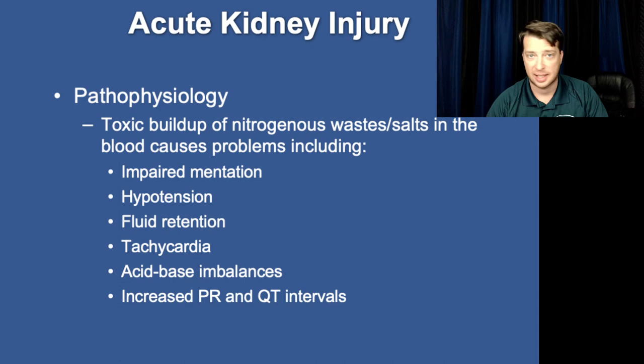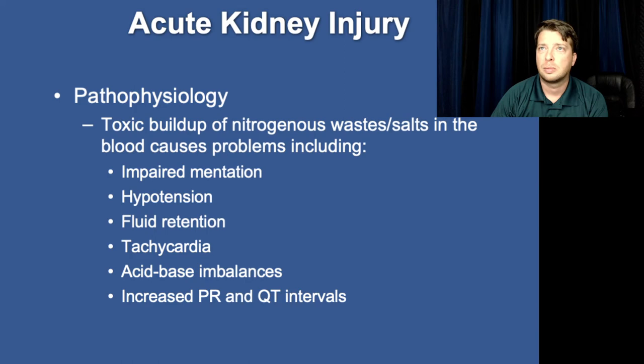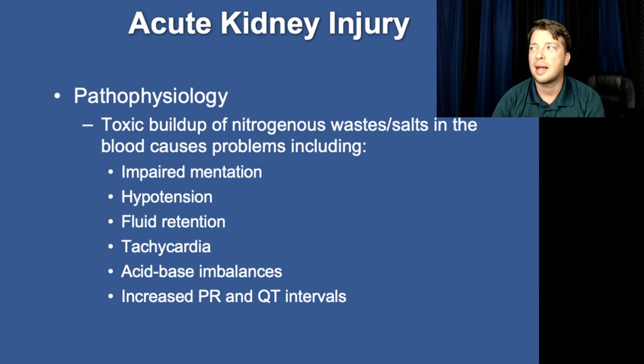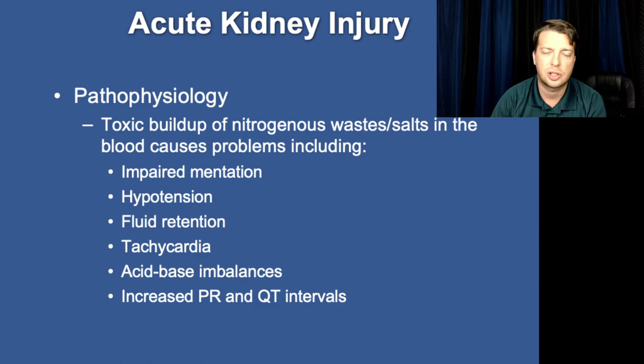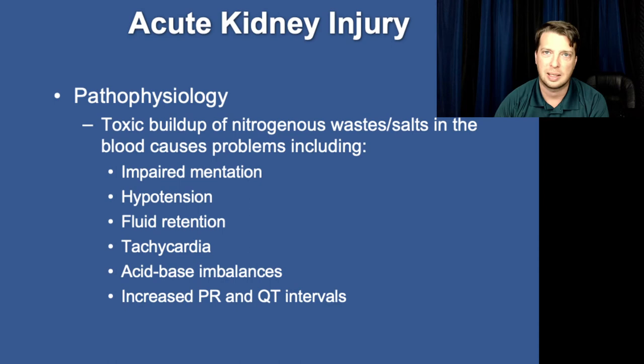Kidney failure will stop the production of urine. The patient doesn't realize that's necessarily happening, so you're continuing to absorb fluids but not getting rid of it. As your blood chemistry changes, it becomes more acidotic, higher levels of potassium, and fluid is going to start shifting into the blood, increasing the blood volume. This is going to stress the heart, stress the pulmonary capillaries, and you'll start to see that third spacing into the lungs.